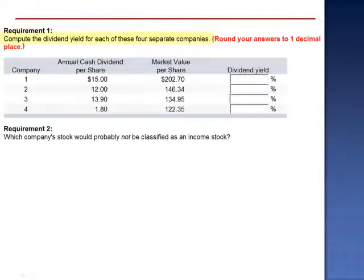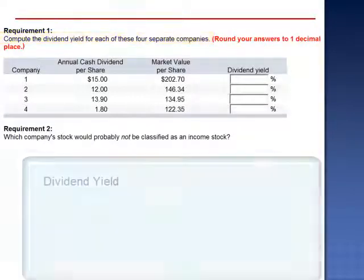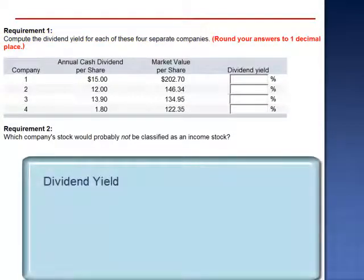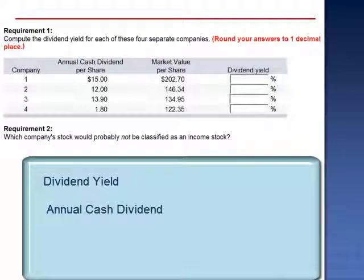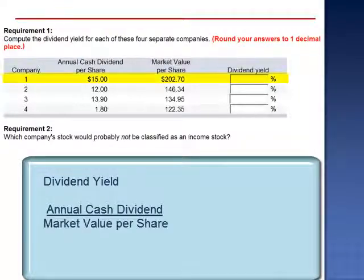Exercise 14. Compute the dividend yield for each of these four separate companies. The dividend yield is calculated by taking the annual cash dividend per share and dividing by the market value per share.